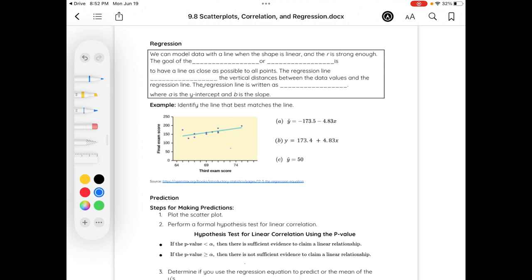We can model data with a line when the shape is linear and the r is strong enough. The goal of the line of best fit or the regression line, which was covered earlier in the semester, is to have a line as close as possible to all the points. The regression line minimizes the vertical distance between the data values and the regression line. The regression line is written as y hat equals a plus bx, where a is the y-intercept and b is the slope.